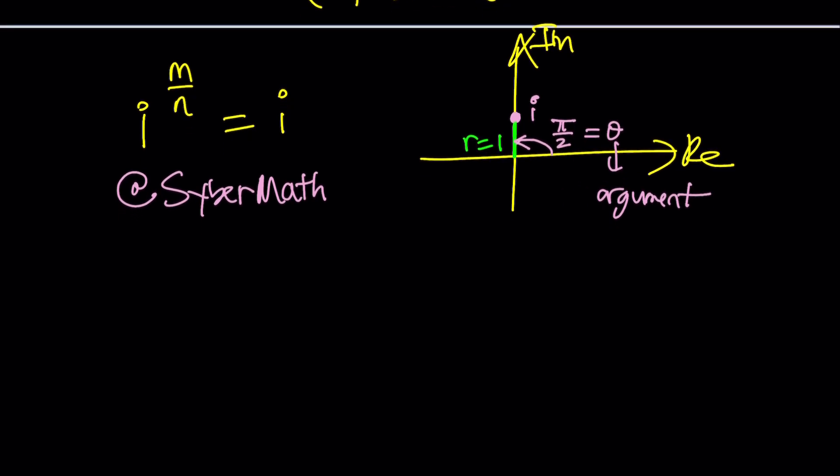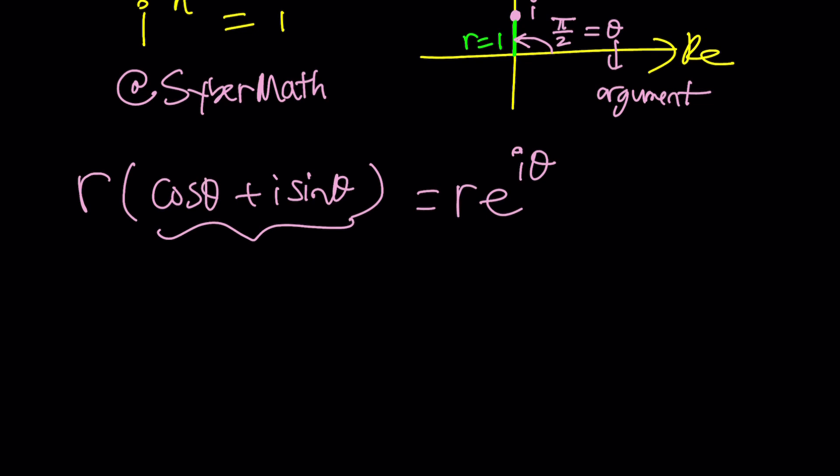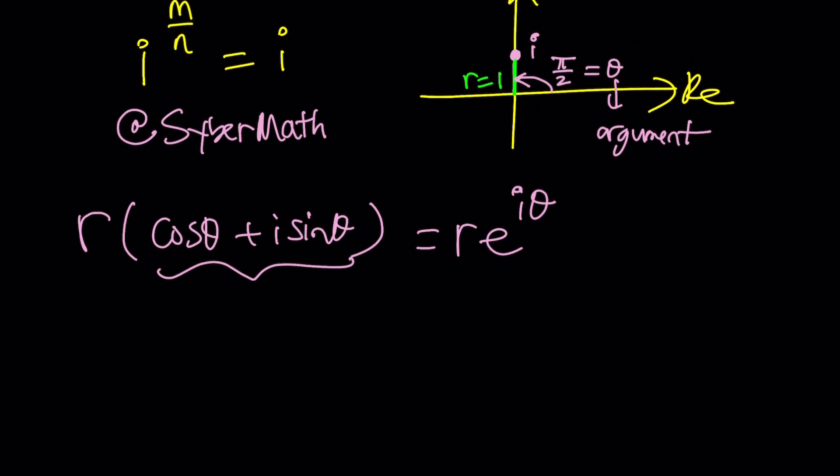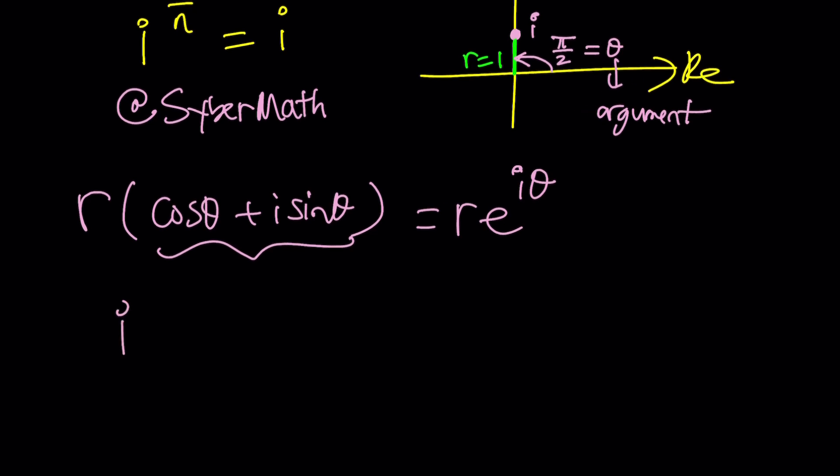How do we solve an equation like this by using the complex plane or the Euler's form or the polar form? Thanks to Euler, we have a beautiful expression for complex numbers. Instead of writing cosine theta plus i sine theta multiplied by a modulus r, we can write this as r times e to the i theta. This basically replaces or is a beautiful expression. So i can be written as e to the power i pi over 2.